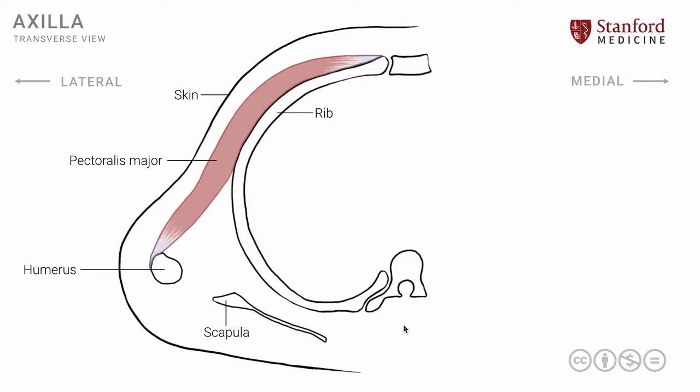The second muscle important in relation to the axilla is the serratus anterior muscle. This muscle has its attachment onto the medial border of the scapula, and the fibers run to the ribs as shown here. This muscle, along with the underlying ribs, forms the medial boundary of the axilla.